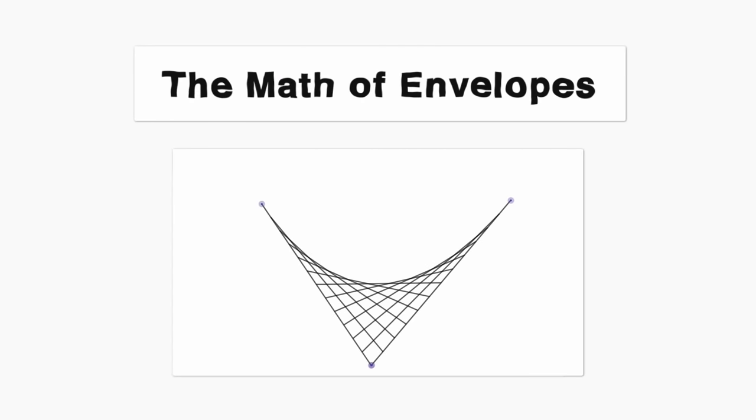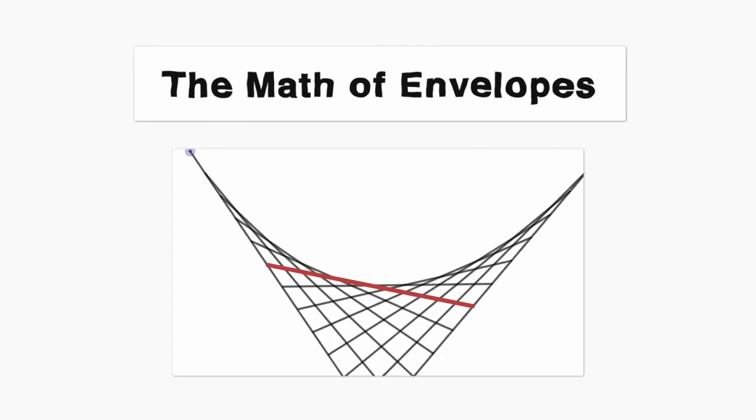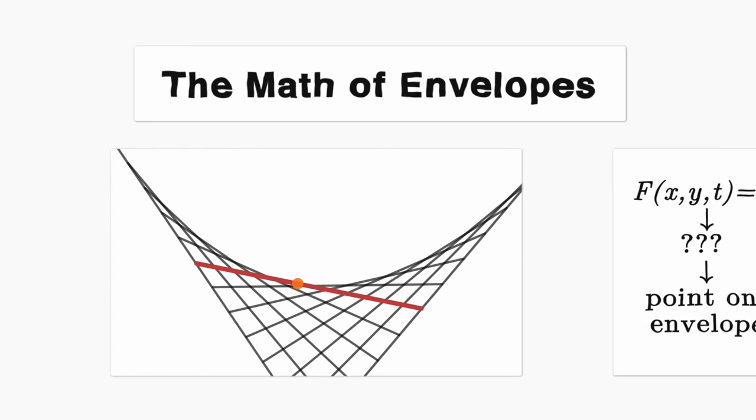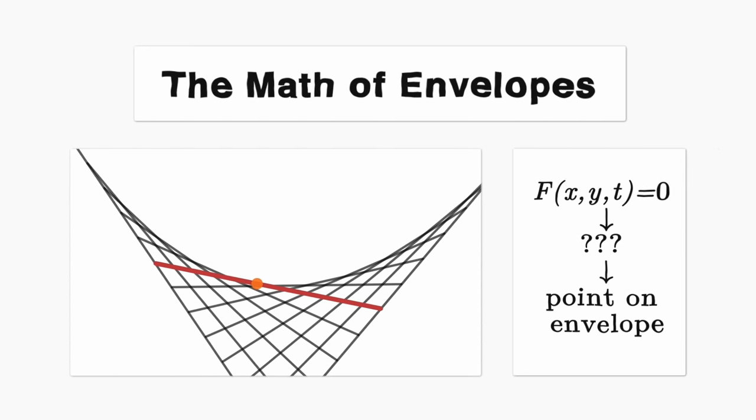Okay, now math time. What's really going on here? Let's zoom in on a curve from the family. It's got some parameter t. Somewhere on this curve, there's a point that's actually on the envelope. And that envelope is itself some kind of smooth function. How can we find this point on the envelope, knowing our function f?